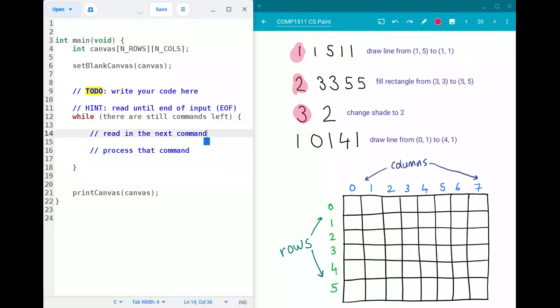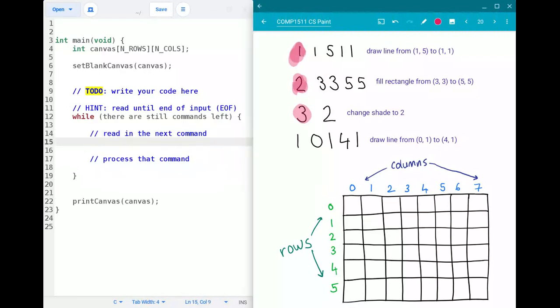So then how you could actually go about coding this would be when you read in the next command read in just this number here which tells you what the command should be. So for example if I've got some int called command that I can just read into I can just do scanF percent d into the variable called command and so this will read in the first number that we've got here this this one or two or three and so based on that command we can work out what we should do next and whether it's a one or whether it's a two or whether it's a three. How do we do that sort of thing in C? That's right with an if statement.